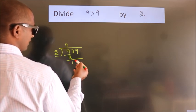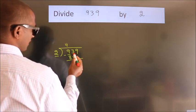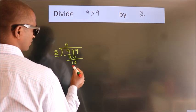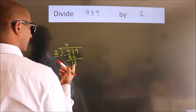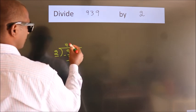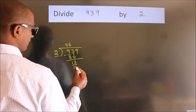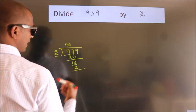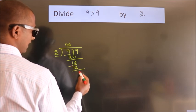After this, bring down the beside number. So 3 down, making 13. A number close to 13 in the 2 table is 2 sixes are 12. Now we subtract and get 1.